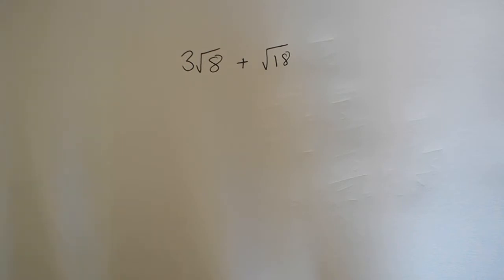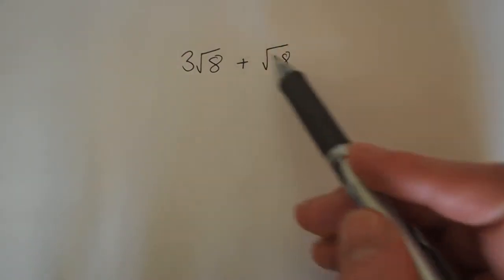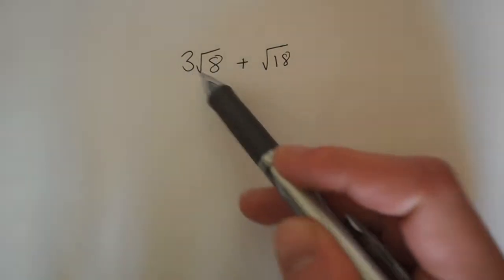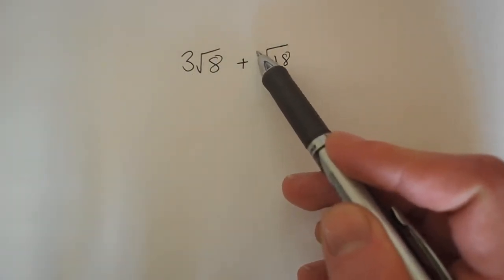So essentially adding and taking away is the same methodology of doing it. However, doing it is considerably different from the previous video when we multiplied surds. You can't simply just add these together. You can't add the 8 and 18 and the 3 and the imaginary 1 here.